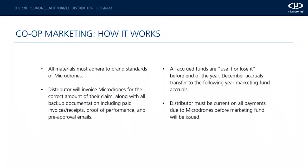Two other housekeeping notes. All accrued funds are use it or lose it. You can and should use your marketing funds the way you see fit throughout the year, but you must use them before the end of the year. If we get to December of 2021 and you haven't used the funds you've built up over the course of the year, they don't carry over to the next year. December accruals transfer to the following year, but that's it. Distributors that participate in this program must be current on all payments due to Microdrones before the marketing fund credit or rebate will be issued.